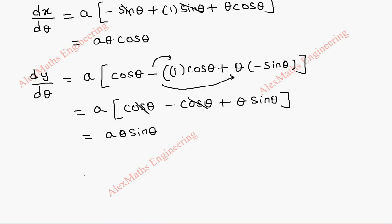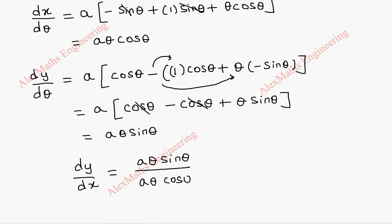From these two, we can find dy by dx. dy by dx is a theta sin theta divided by a theta cos theta. We can cancel a theta, and sin theta by cos theta is tan theta.